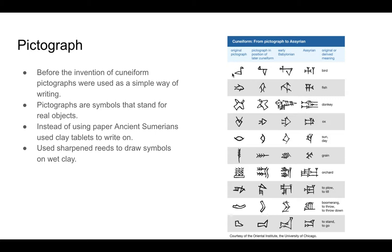Here you have what the original pictograph looked like — a bird. Later on they started to change it as it became more complex, through early Babylonian and Assyrian forms, and that symbol meant 'bird.' You can keep going down and it breaks it down for you pretty well.